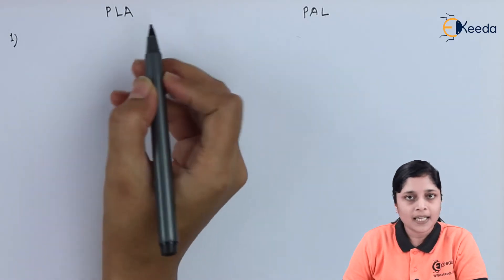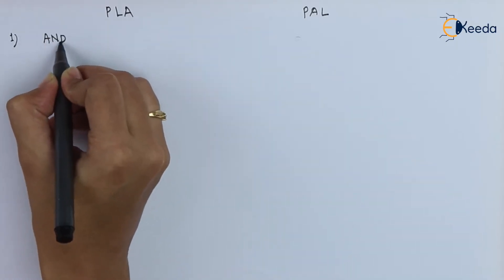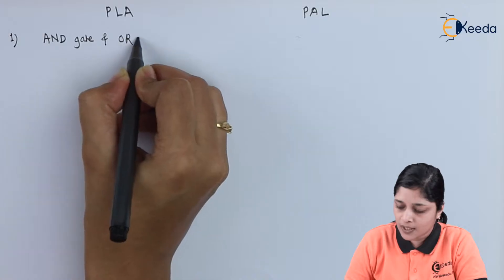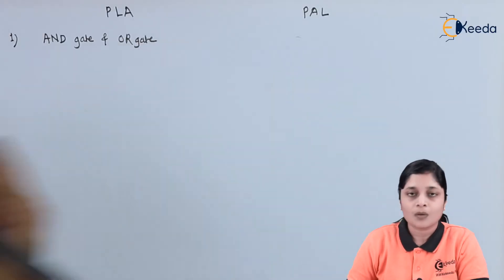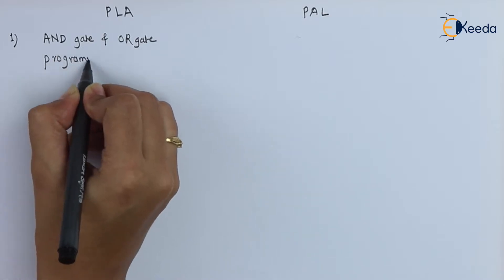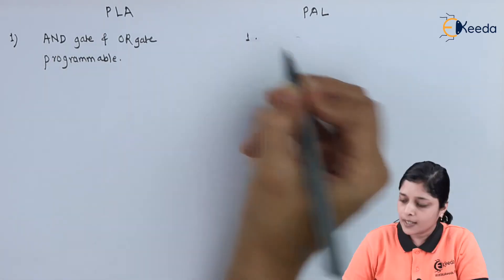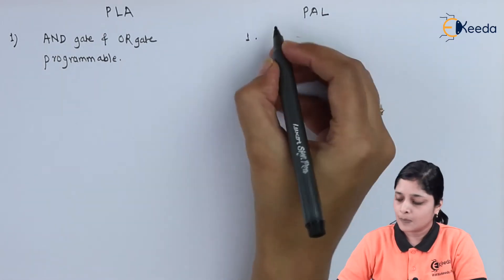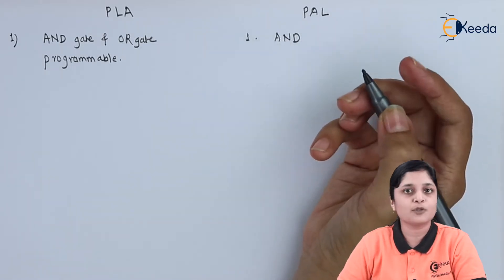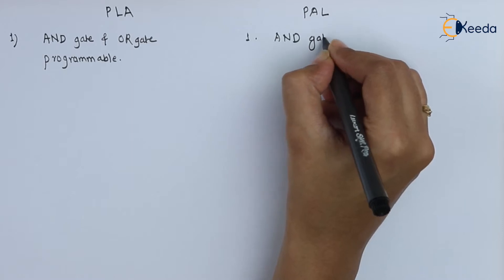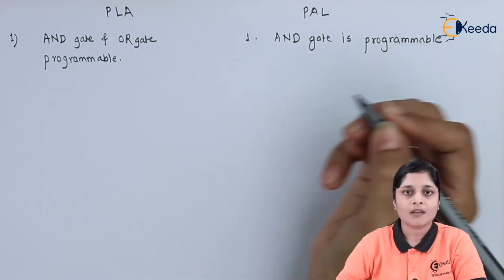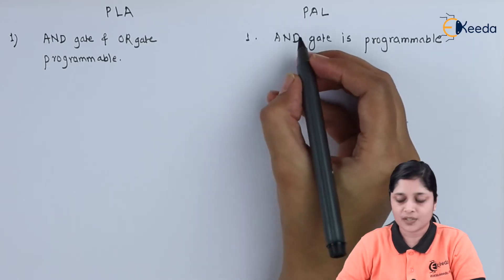In PLA, both the AND gate and OR gate are programmable. In PAL, only the AND gate is programmable, and the OR gate is fixed.